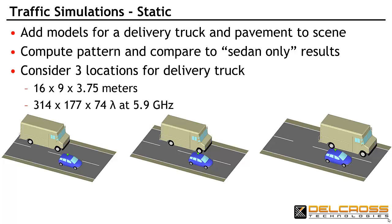First, we'll consider three static situations involving differing relative positions of the car and the van, and use Savant to predict the installed performance of our IVC antenna when the proximity of the van is taken into consideration. This problem covers 314 by 177 wavelengths in extent and is 74 wavelengths high.